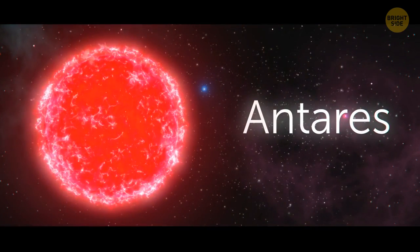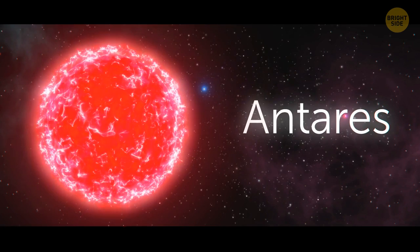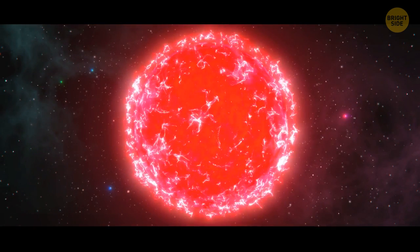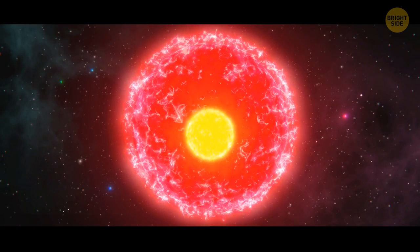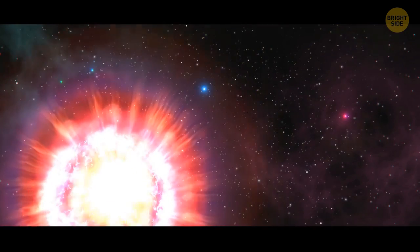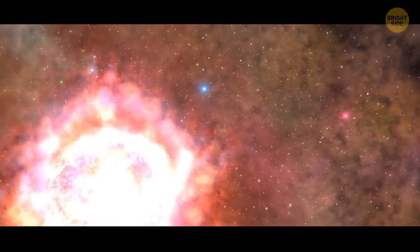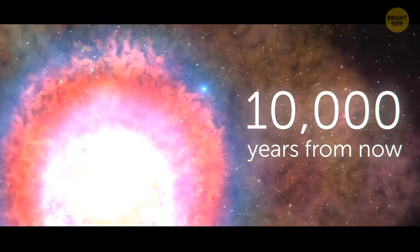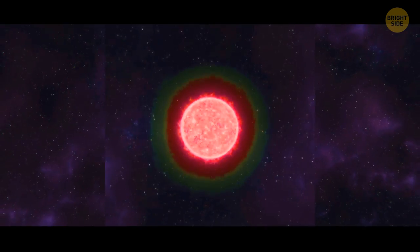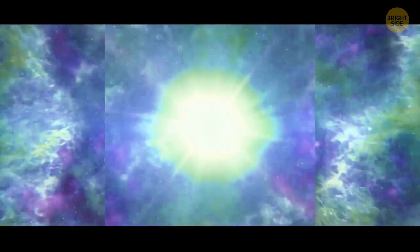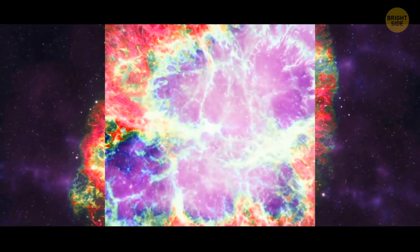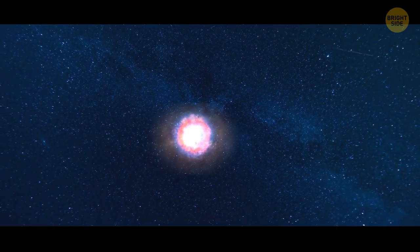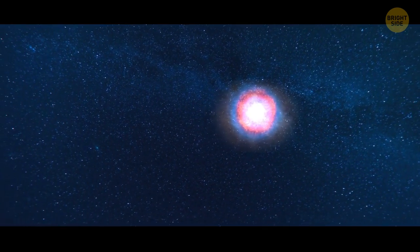Antares is the 15th brightest star in the night skies. It's also an old red supergiant, 12 times larger than the Sun. Stars this massive age to a point where they collapse in on themselves, producing huge supernovas. For Antares, this will happen just 10,000 years from now, which is nothing for a 12-million-year-old star. The resulting burst will be too far away to affect life on this planet negatively. But the light show will be visible here on Earth, even during the day.